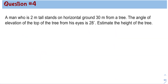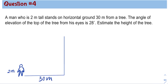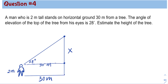A man who is 2 meters tall stands on horizontal ground 30 meters from a tree. The angle of elevation of the top of the tree from his eyes is 28 degrees. Estimate the height of the tree. So assuming this is the person who is 2 meters tall, this vertical line represents the tree, and that tree is 30 meters from the person. Since the angle of elevation is 28 degrees from his eyes, the angle formed between the line of sight and the horizontal is 28 degrees. This horizontal line is also 30 meters. We will call X the distance from the top of the tree down to the person's eye level, and from that point to the ground is 2 meters.